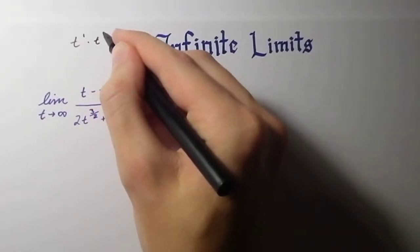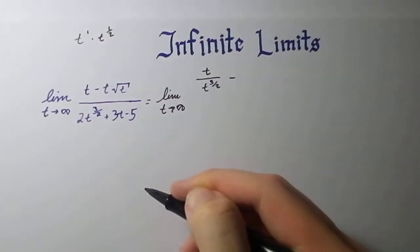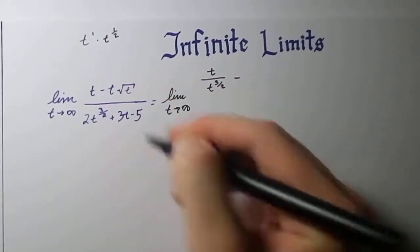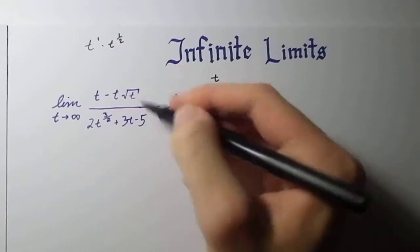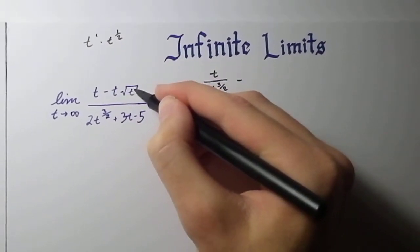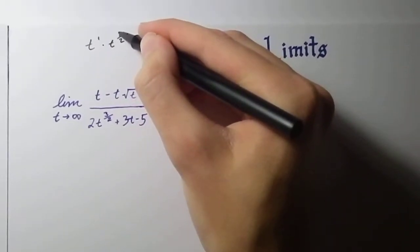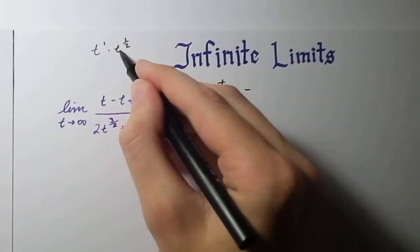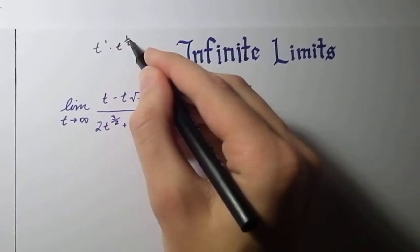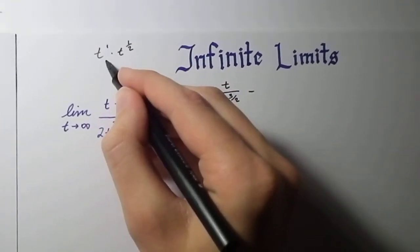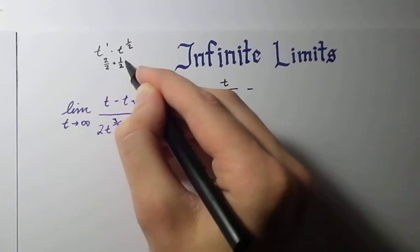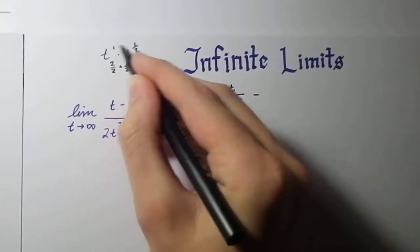Square root of t is the same as t to the 1 half, because the index of a square root is of course 2, but we don't write that. t inside is raised to 1, so the numerator and the exponent is 1. Since we have a variable multiplied to the same variable, we add the exponents. So it's essentially 2 over 2 plus 1 over 2 equals 3 halves.